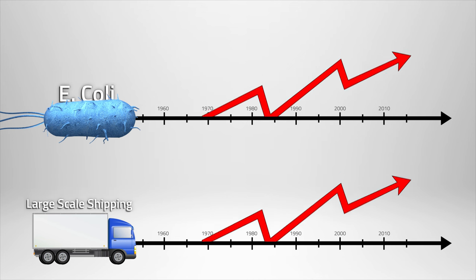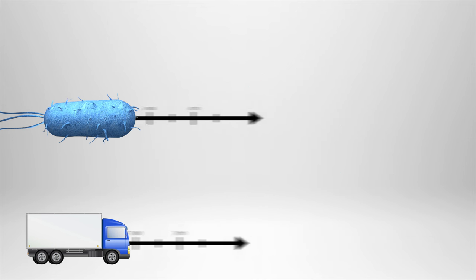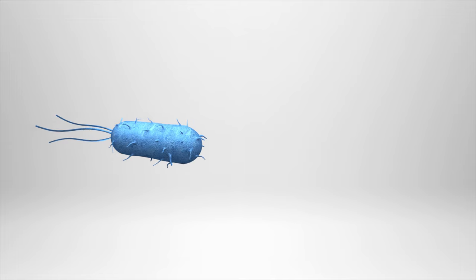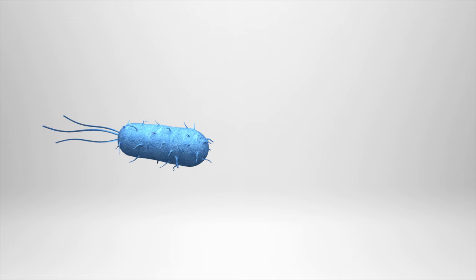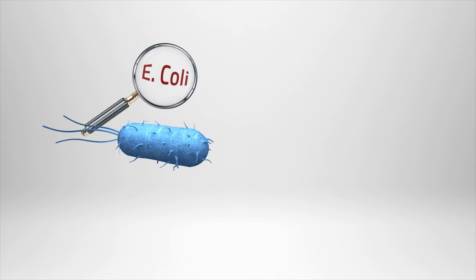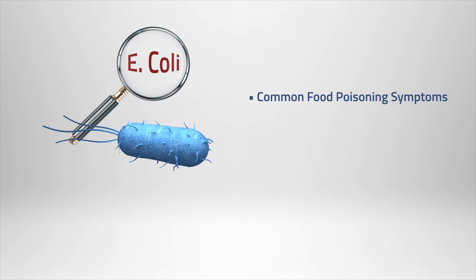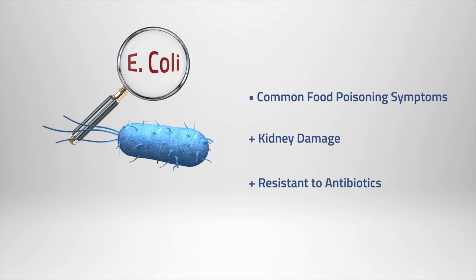All of these advancements have also strengthened foodborne pathogens. When E. coli was first identified, it produced only the common food poisoning symptoms. But now, the strain is far more damaging to the victim's kidneys, and even resistant to antibiotics.